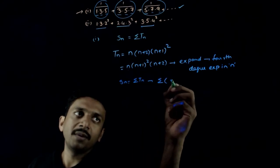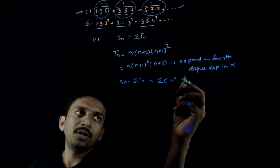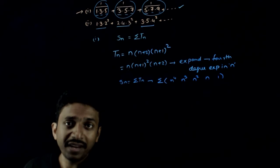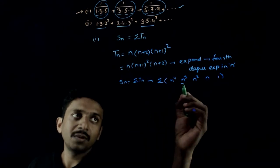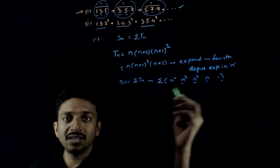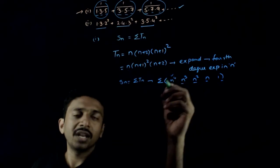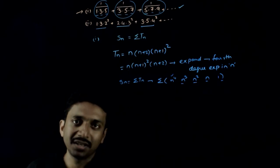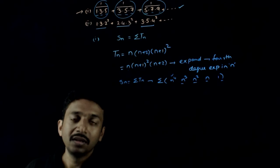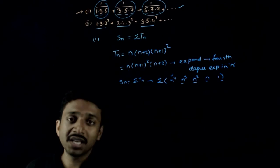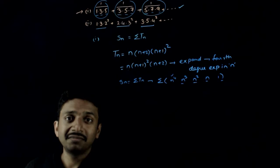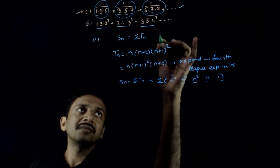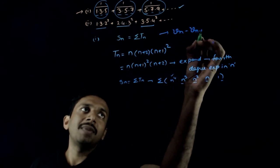We would need terms: sigma n⁴, sigma n³, sigma n², sigma n, and constant. We have formulas for sigma n³, sigma n², sigma n, but we don't have a formula for sigma n⁴. So we cannot directly use Sn = sigma Tn in this case. The other method left is the Vn − Vn−1 technique.